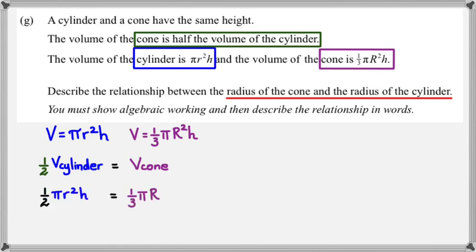So we would get ½πr²h equals ⅓πR²h. So from this point we need to rearrange everything. I'm just going to get a bit more room here. So writing the formula down, what I want to do is I want to have little r by itself.